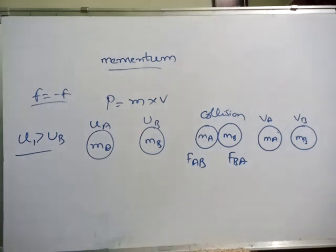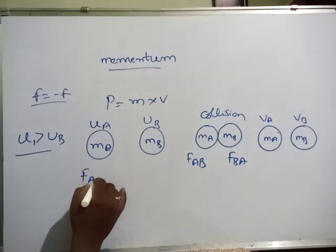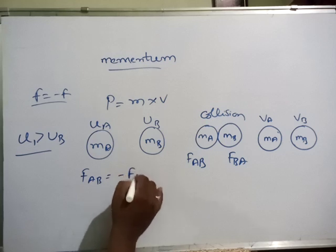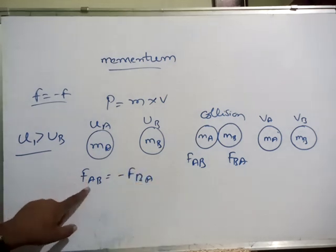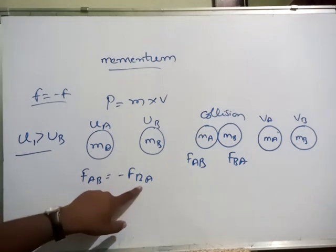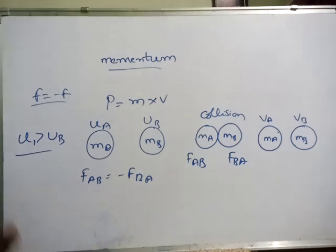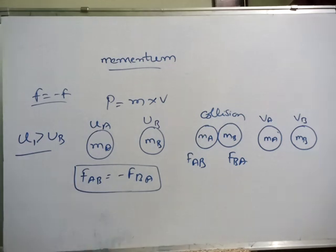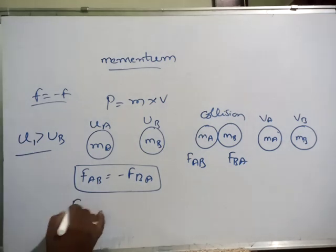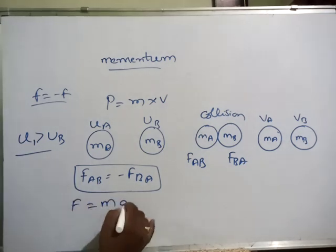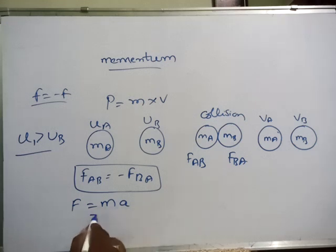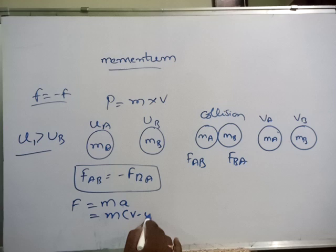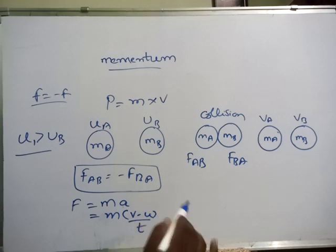According to Newton's Third Law, FAB is equal to minus FBA — meaning force on ball A due to B equals force on ball B due to A. By applying this rule, we have to equate both the forces. Force is nothing but mass into acceleration, and acceleration means final velocity minus initial velocity divided by time.